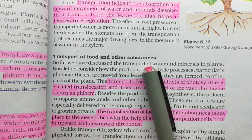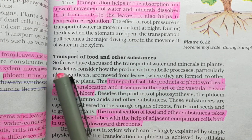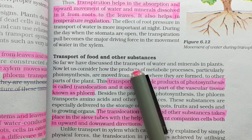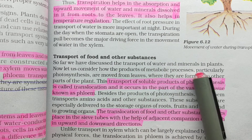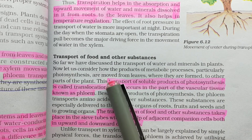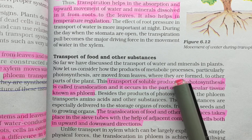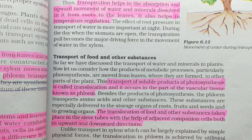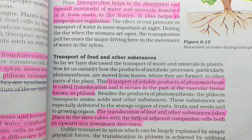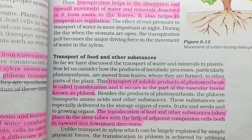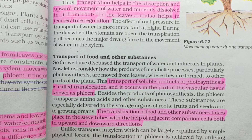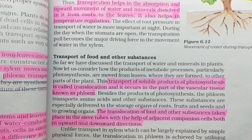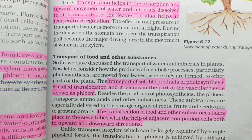So far, we have discussed the transport of water and minerals in plants. Now let us consider how the products of metabolic processes, particularly photosynthesis, are moved from leaves where they are formed to other parts of the plant. We studied water and minerals via xylem; now we are going to study food, which is produced by photosynthesis. Photosynthesis produces glucose, and this process takes place in the leaves.